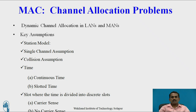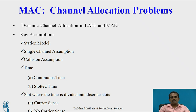The second type is Dynamic Channel Allocation in LANs and MANs. In dynamic channel allocation, we do not fix any fixed number of users to each channel. Based on that, they have given different key assumptions. The first is the Station Model — the station may be a computer or any communicating device, and we need to check how to transfer data from one device to another. The second is the Single Channel Assumption, where only one single channel is used for communication, and all stations use that single channel for transmitting data.